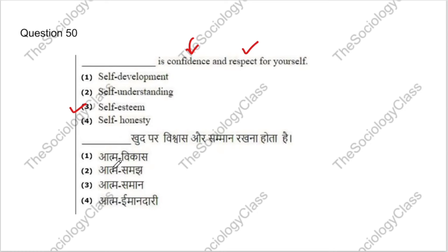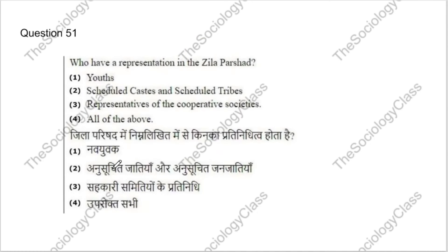Question 51: Who has representation in Zilla Parishad? Options: youth; Scheduled Castes and Scheduled Tribes; representatives of corporate societies; or all of the above. The correct answer is B — Scheduled Castes and Scheduled Tribes.